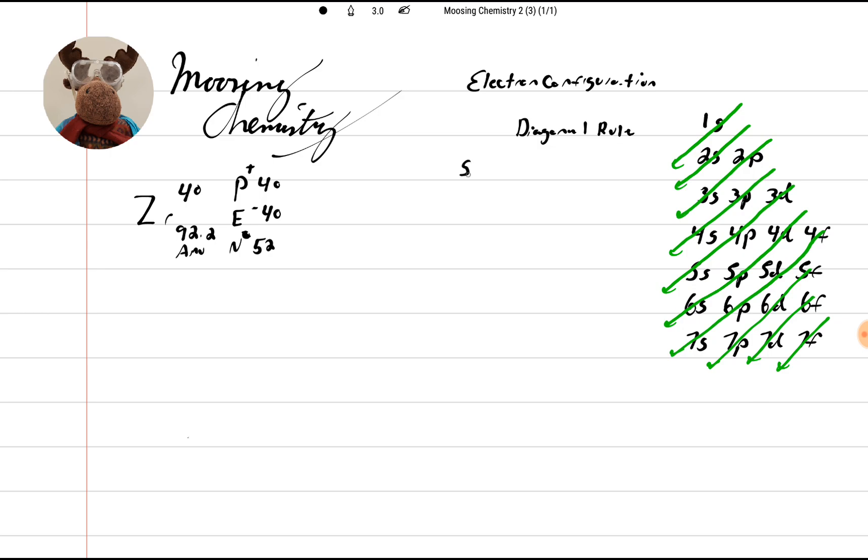Remember that S can hold a max of 2 electrons. P can hold a max of 6 electrons. D can hold a max of 10 electrons. And F can hold a max of 14 electrons.